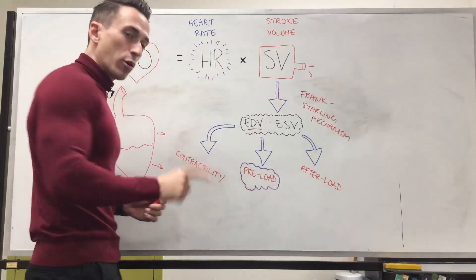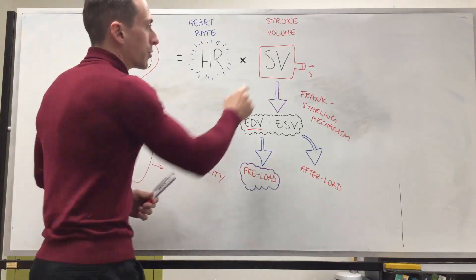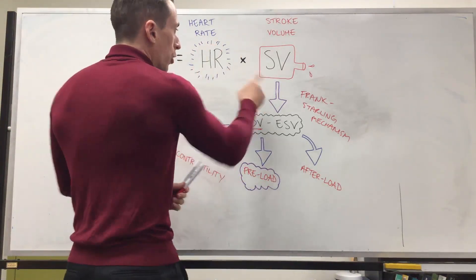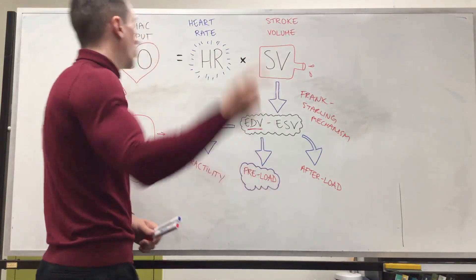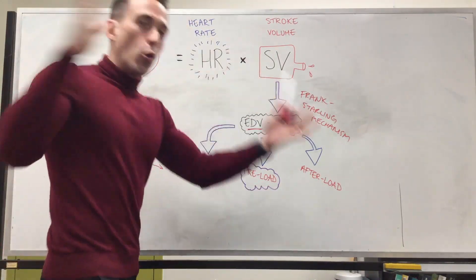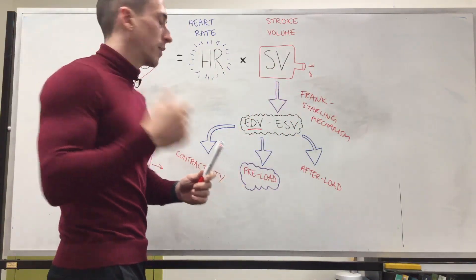That means the higher the preload, so the higher the stretch, the greater the stroke volume. The greater the stroke volume, the greater the cardiac output. So preload is directly proportional to cardiac output. More filling, more contraction, more ejection.